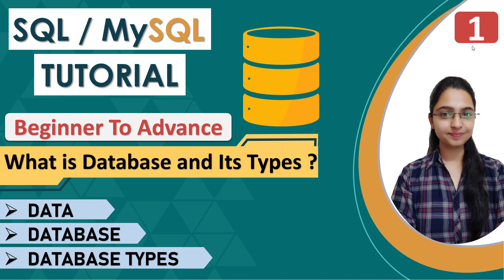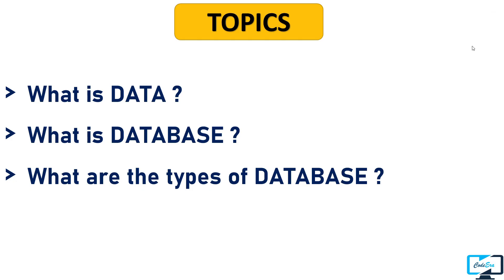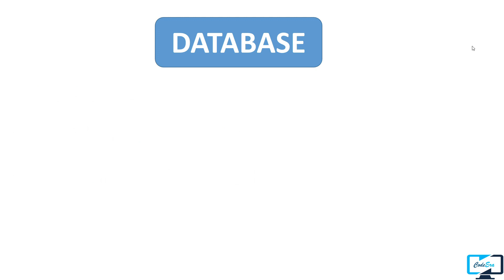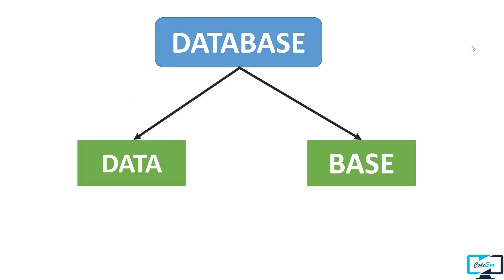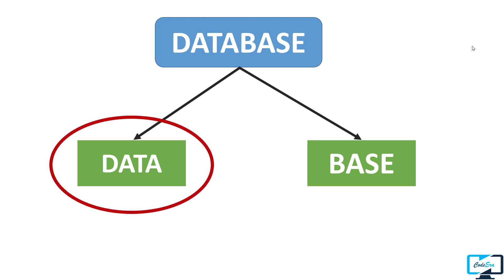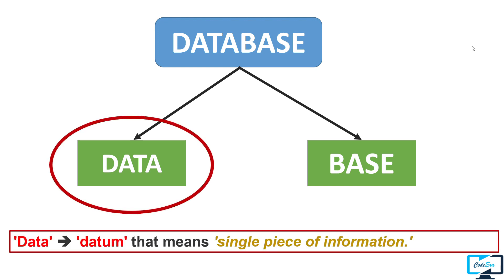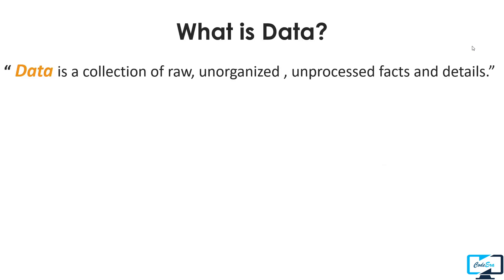In this video we will talk about what is data, what is database, and what are the types of database. If you look closely at the word database, it contains two words: data and base. The word data is originated from the word datum, which means a single piece of information. So the collection of raw, unorganized, unprocessed facts or details is called data.